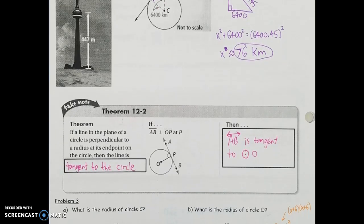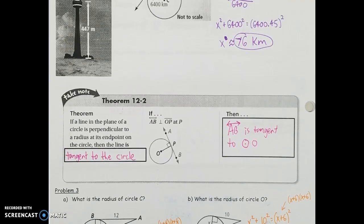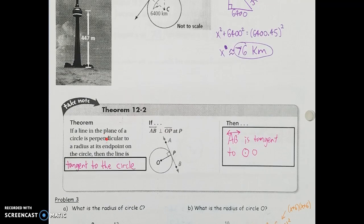The next theorem is the converse of what we've already seen. If a line in the plane of the circle is perpendicular to a radius at its endpoint on the circle, then the line is tangent to that circle. Last time we said if we know we have a tangent line, then we know it's perpendicular. Here, if we know we have a perpendicular, then that line must be tangent. So if AB and OP are perpendicular at point P, then AB is tangent to the circle.